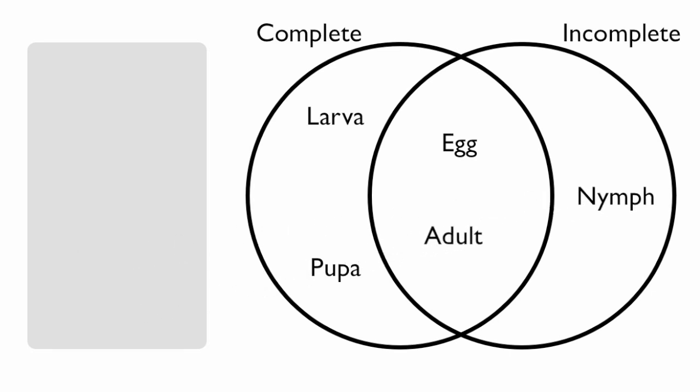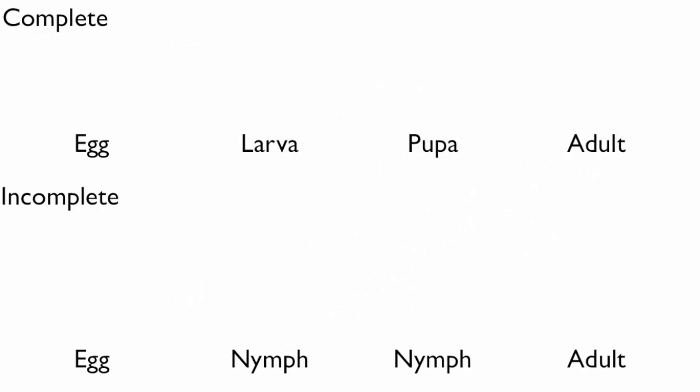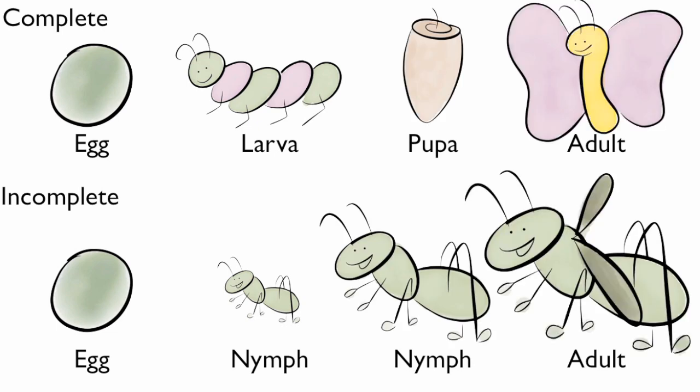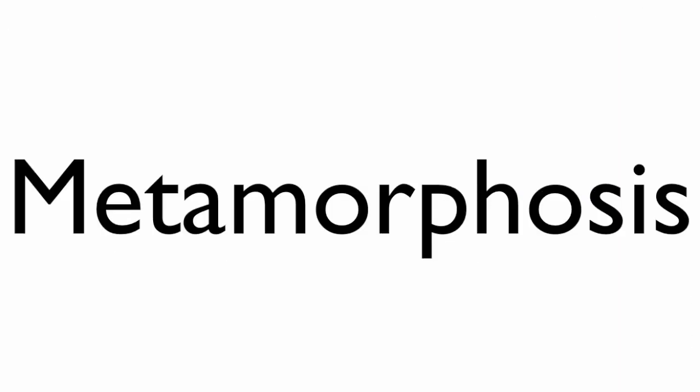And both types end with an adult. The adult is fully developed and can lay eggs to start the life cycle all over again. Metamorphosis.